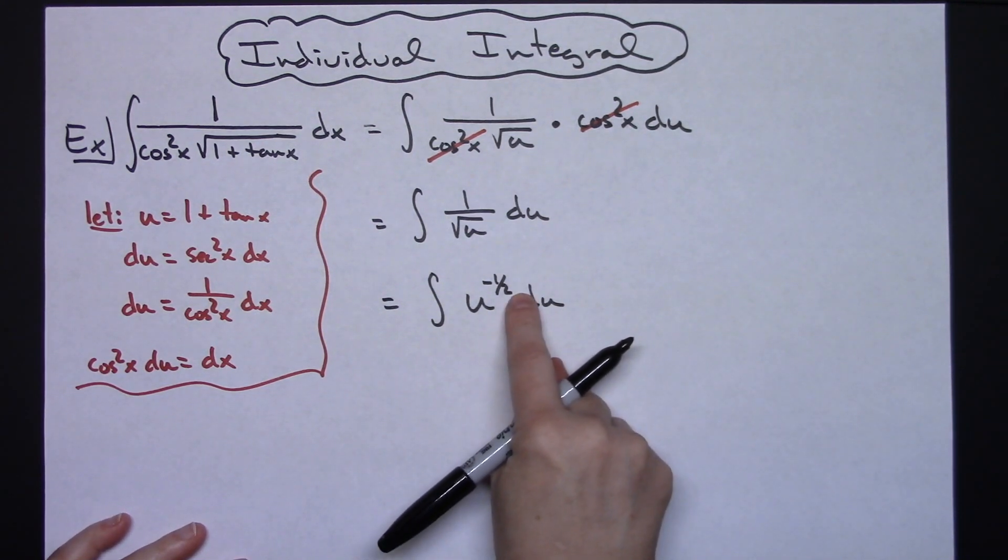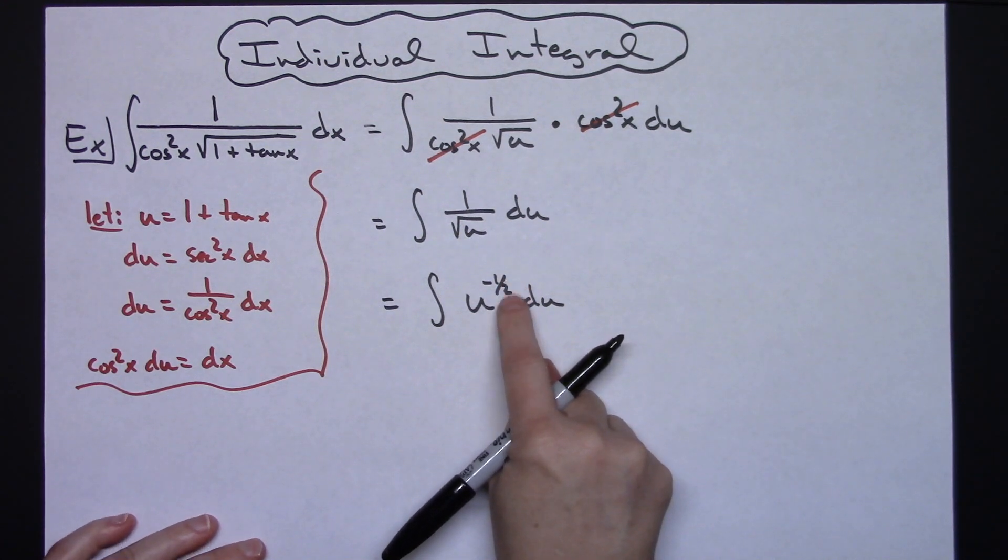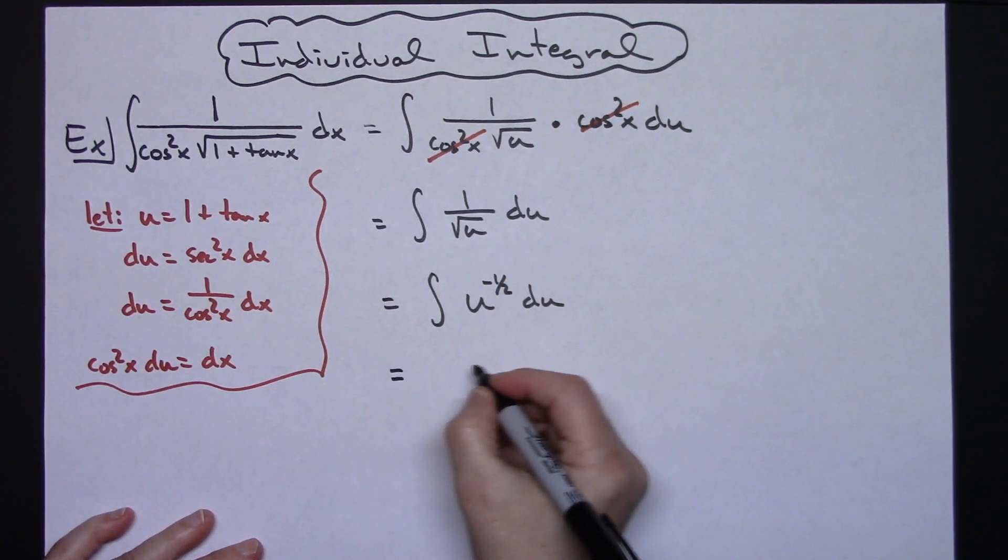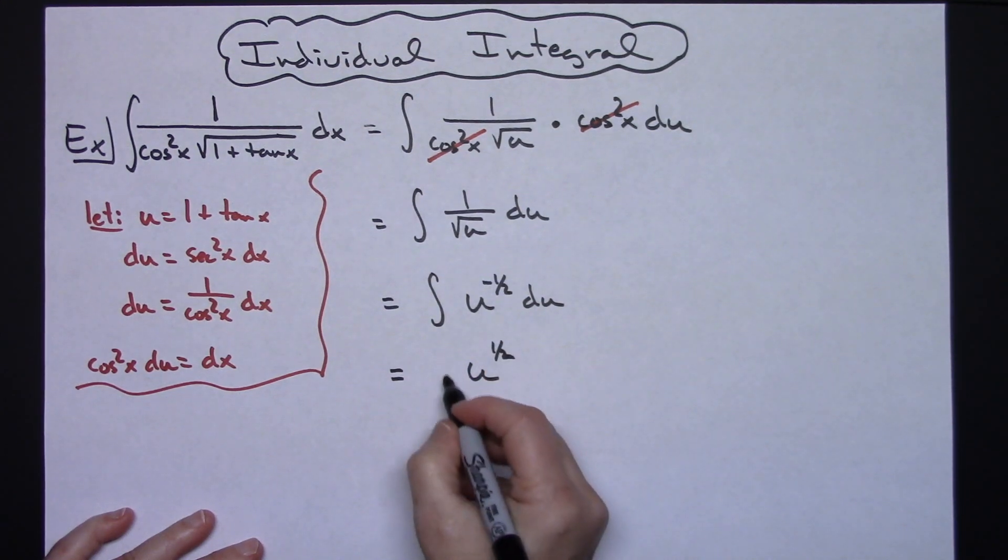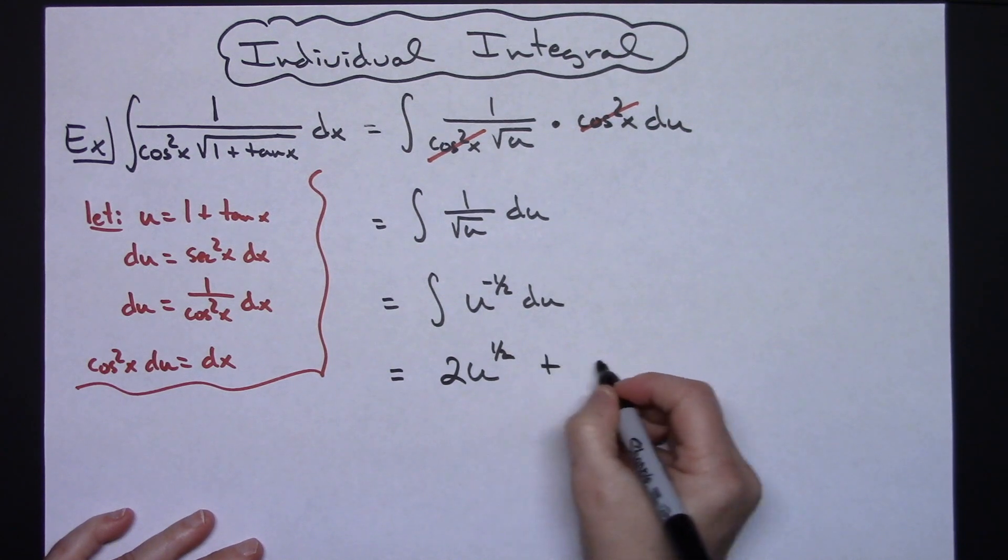So now I can actually integrate, add 1 to my exponent. Adding 1 there is going to give me 1 half u to the 1 half. And then dividing by the 1 here is going to give me a 2 and plus c.